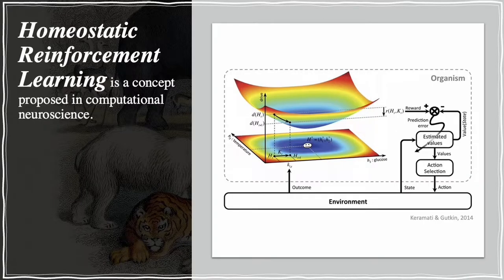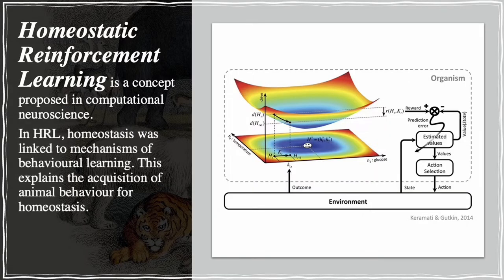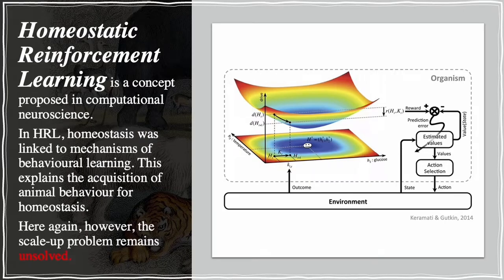Homeostatic reinforcement learning is a concept proposed in computational neuroscience. In HRL, homeostasis was linked to mechanisms of behavioral learning. This explains the acquisition of animal behavior for homeostasis. Here again, however, the scale-up problem remains unsolved.